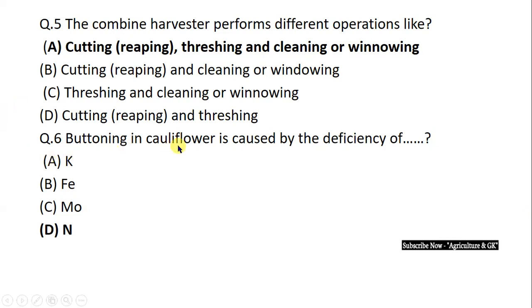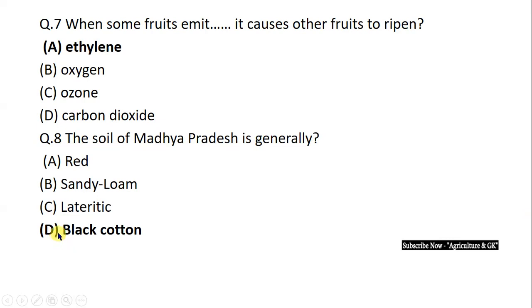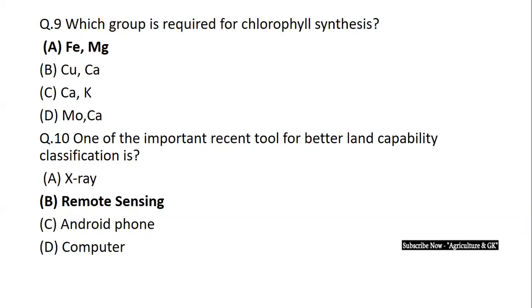Next question: Buttoning in cauliflower is caused by deficiency of nitrogen. When some fruits emit ethylene, it causes other fruits to ripen. The soil of Madhya Pradesh is generally black cotton soil. Which group is required for chlorophyll synthesis? Iron and magnesium.